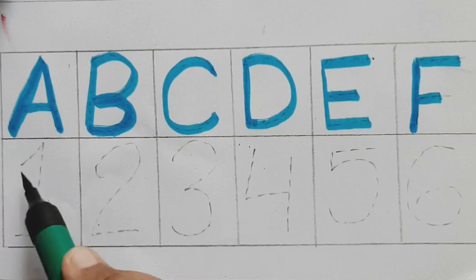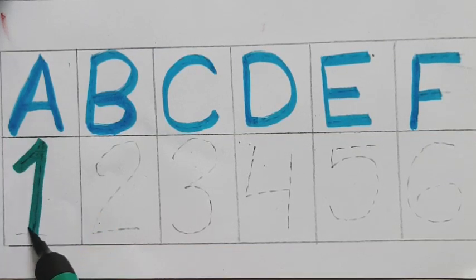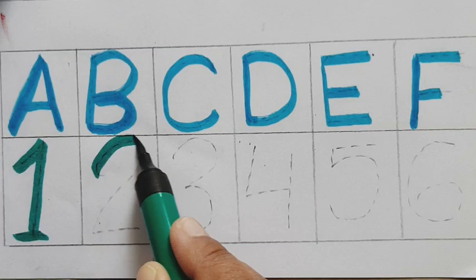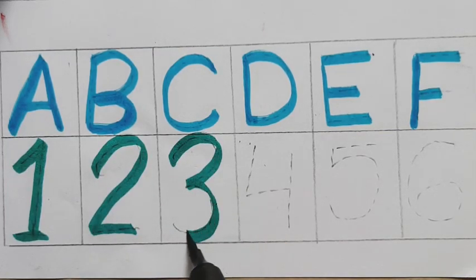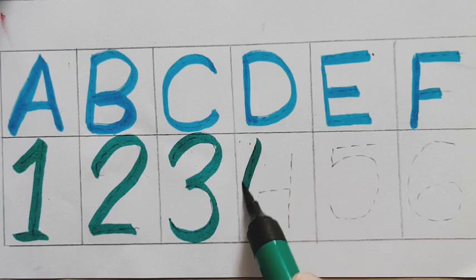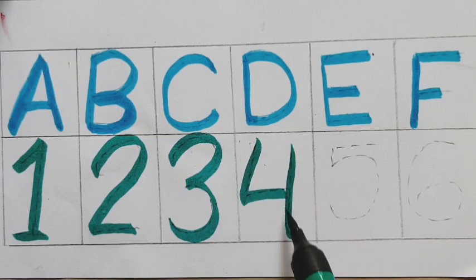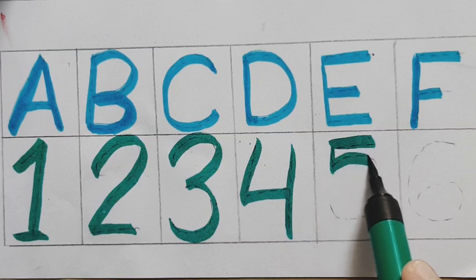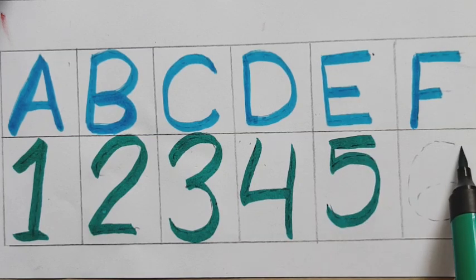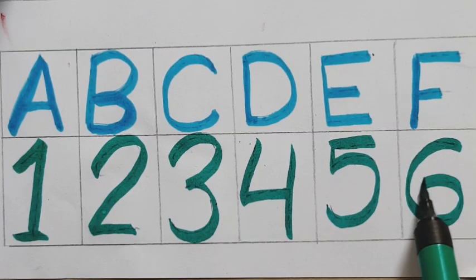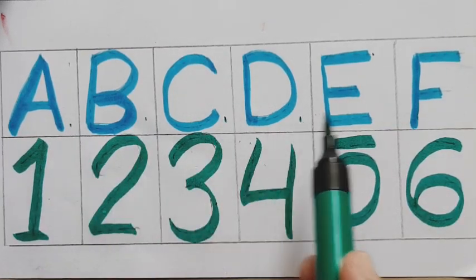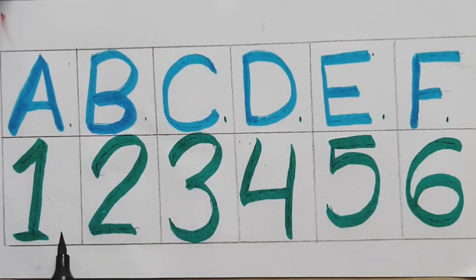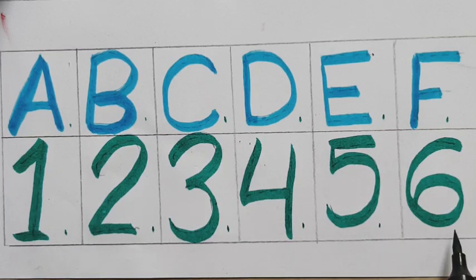Number one, number two, number three, number four, number five, number six — all in green color. A, B, C, D, E, F. Number one, number two, number three, number four, number five, number six.